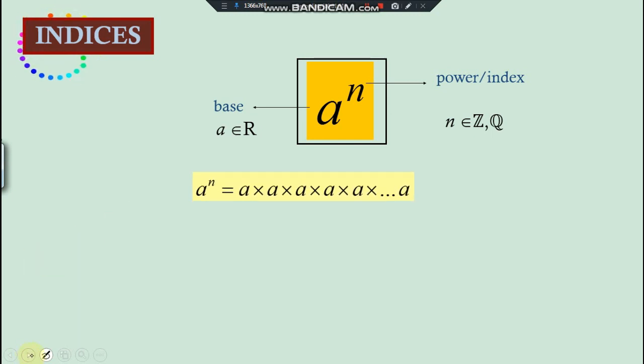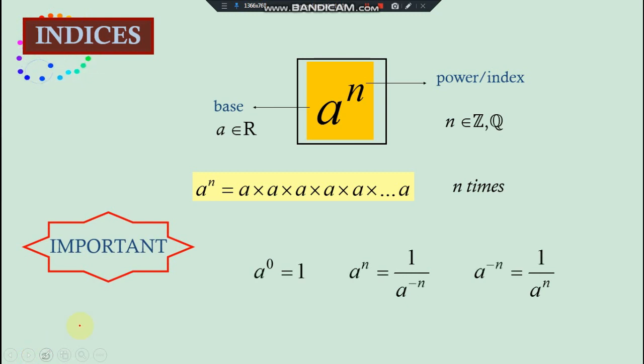a power of n means that a being times n times all together. And important thing is you should know that a power of zero is always one. a power of n means that if you bring to the bottom of a, the power would be changing the sign. The same goes with this.